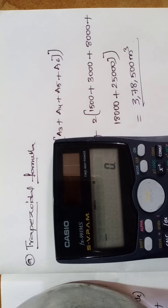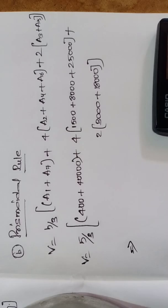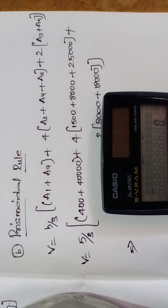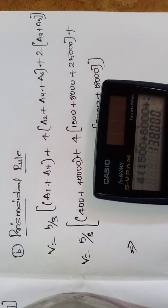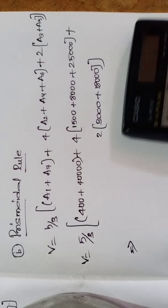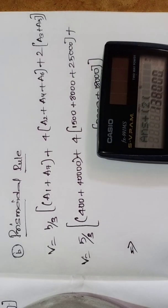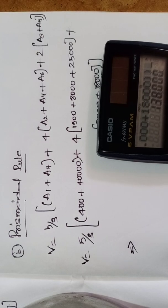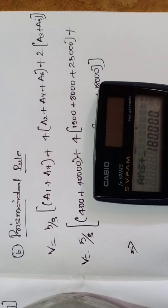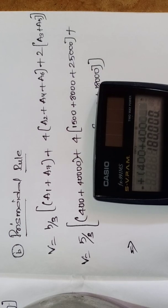Next we'll solve by using prismoidal rule. Again I have substituted all the values. Now I will calculate: first, four times fifteen hundred plus eight thousand plus eight thousand plus twenty-five thousand, plus two into three thousand plus eighteen thousand, plus four hundred plus forty thousand.